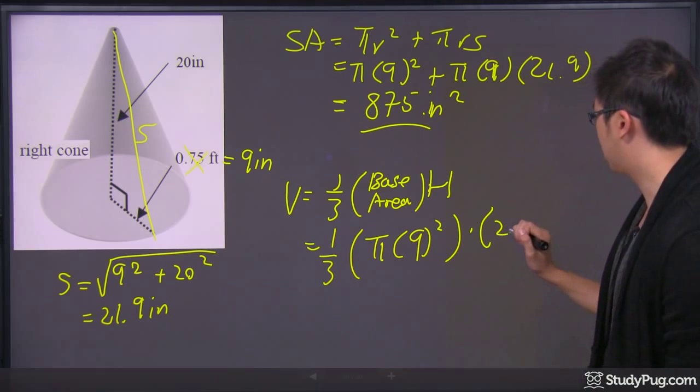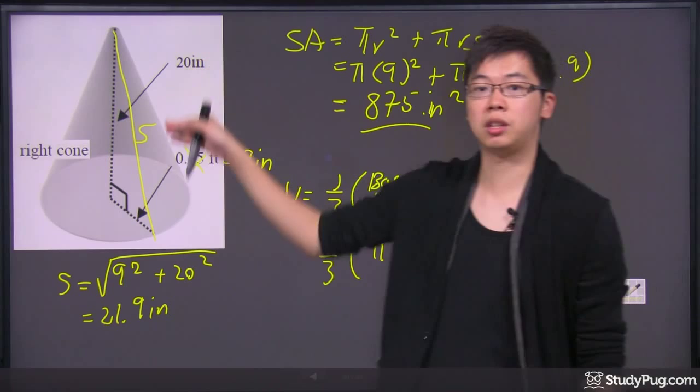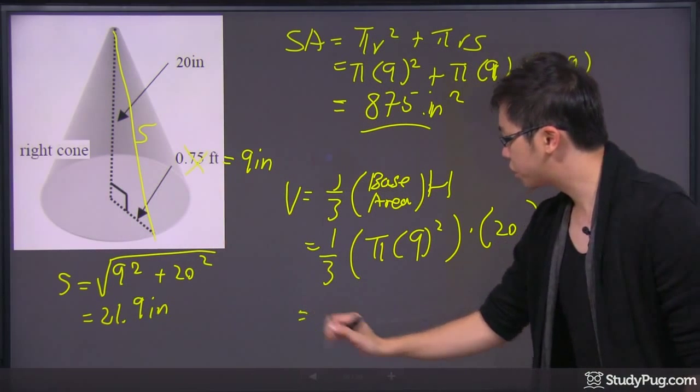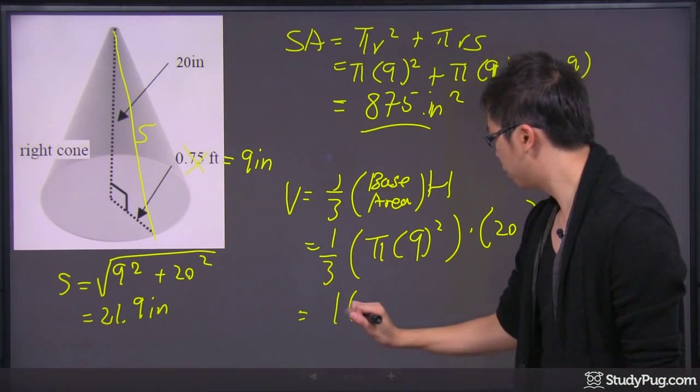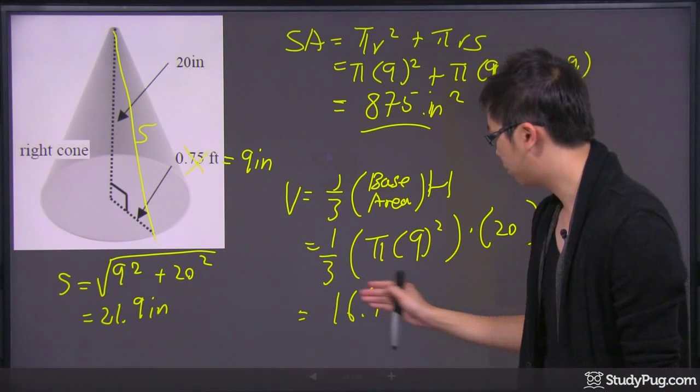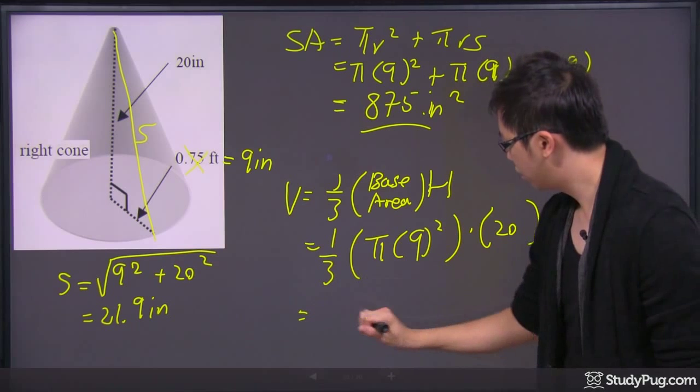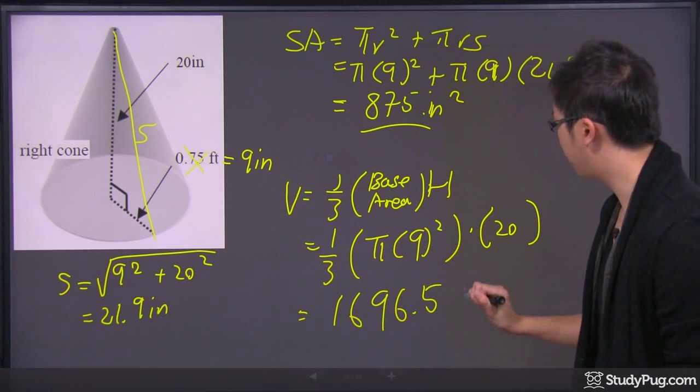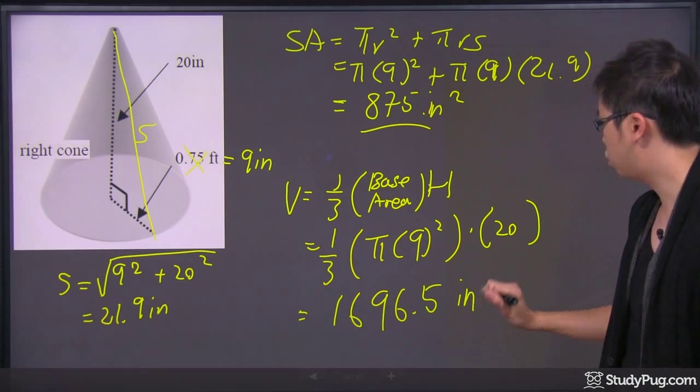It's the height, which is the 20. Not the slanted side. It's just the height of the cone. It's the 20. Let's calculate the volume. We got 1696. I believe it's 0.5 and the unit is inch cubes.